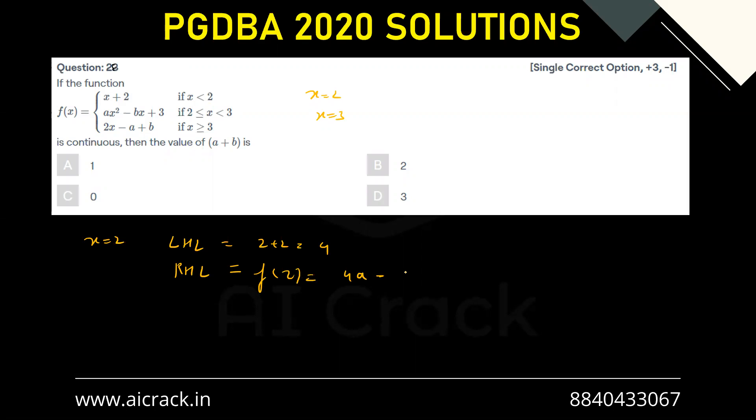4a minus 2b plus 3, and both of them should be equal. So basically 4a minus 2b plus 3 equals to 4. That gives me 4a minus 2b equals to 1, so this is my first equation.